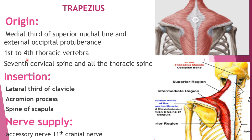The middle part originates from the 1st to 4th thoracic vertebrae and is inserted into the acromion process. The lower part originates from the 7th cervical vertebra (C7) to T12.